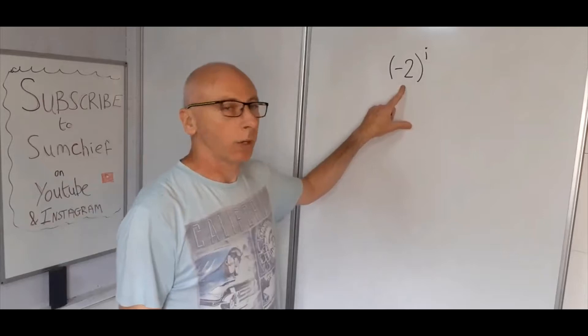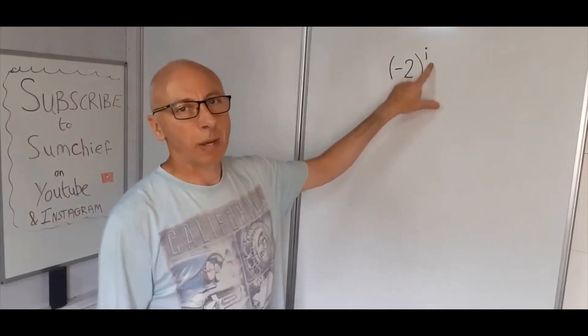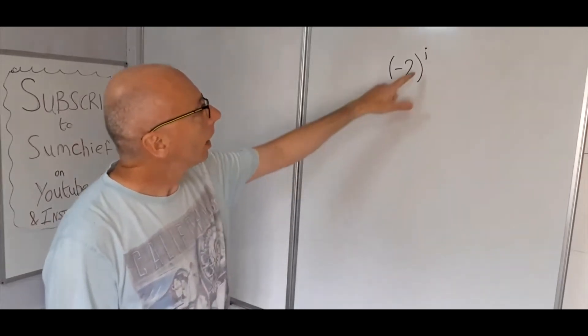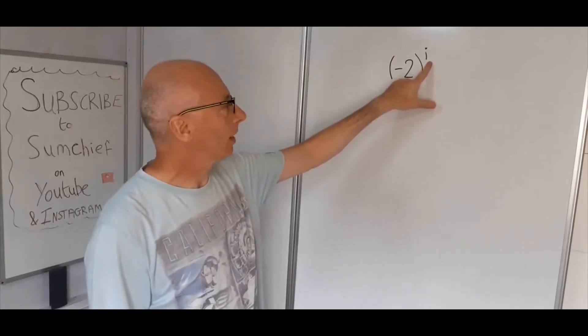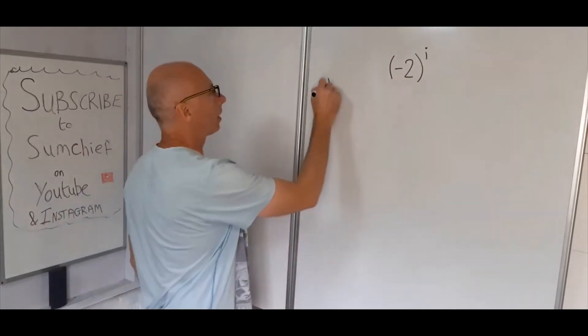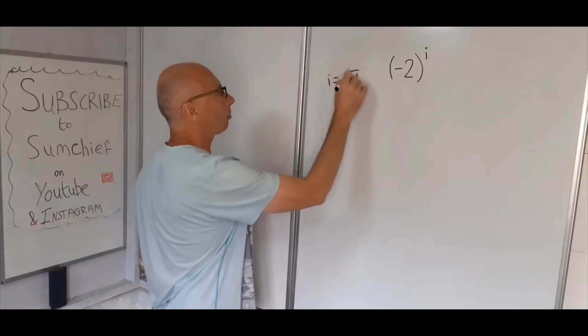Okay, so this question here: what is minus two to the power of i? We've got i in the indice here, so obviously this is complex analysis. So i equals square root of minus one.